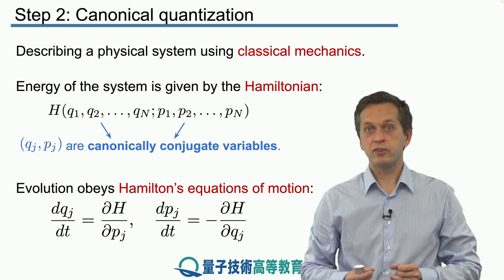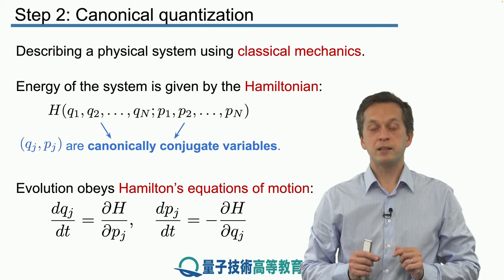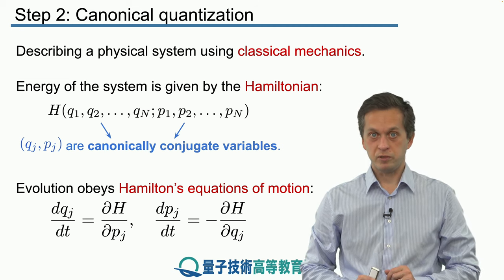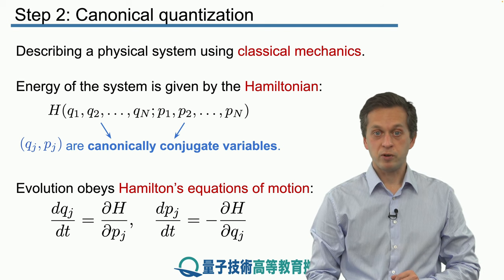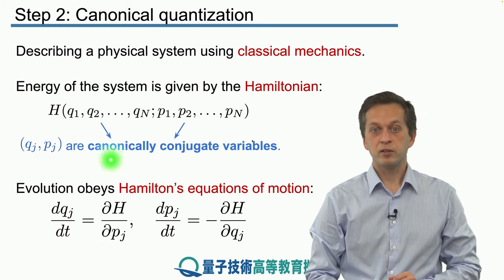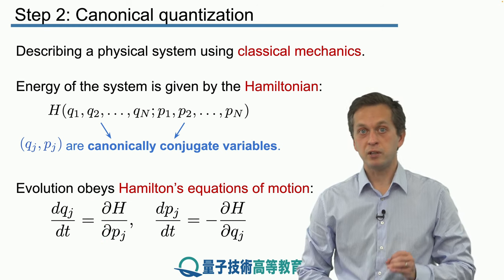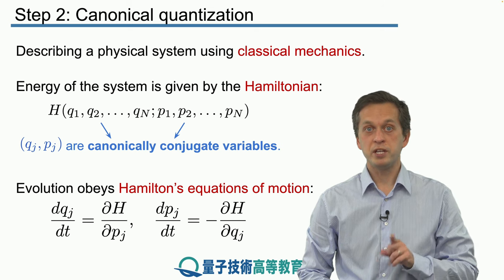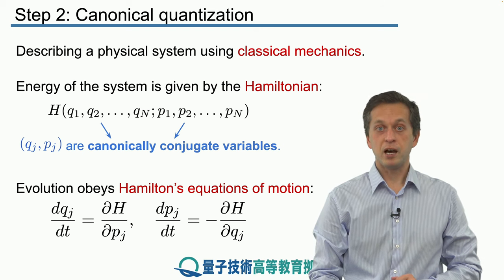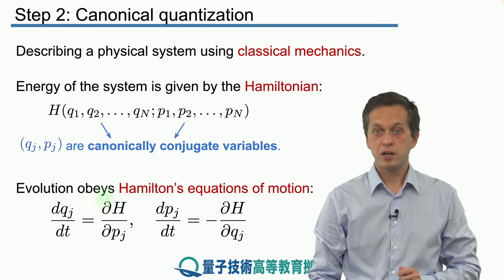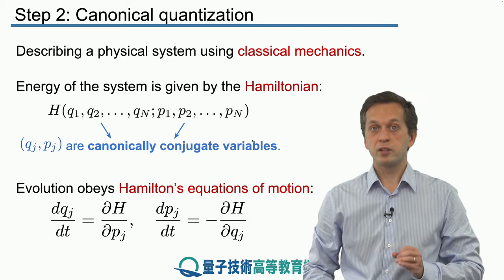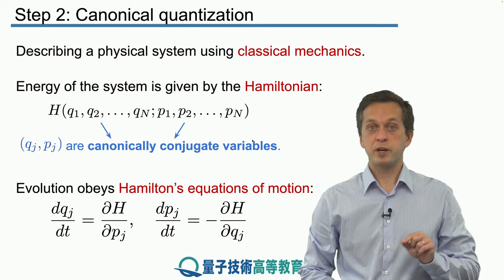And how do you find the evolution of your system? You apply the Hamilton's equations of motion, but only if you have canonically conjugate variables. Your positions obey the following equation. The change in time of your position qj depends on the right-hand side here. You just take the Hamiltonian and you differentiate it with respect to pj. And that will give you the evolution of your position qj. Similarly, how does the momentum of particle j evolve in time? That's given by the negative, that's very important, of the partial derivative of your Hamiltonian h with respect to qj.